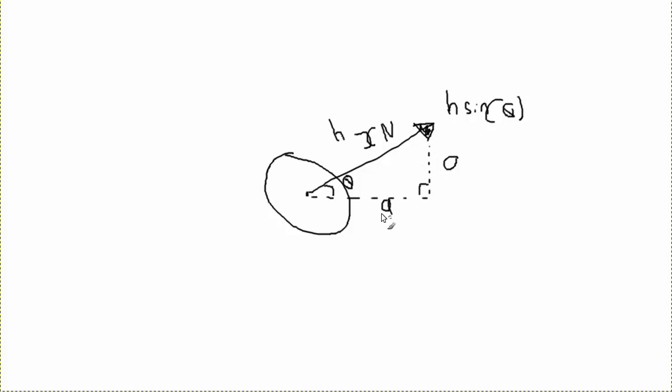In order to calculate our adjacent, which is this one here, which is adjacent to the angle, we would simply take h and multiply it by the cosine of theta. Very simple, unless you haven't done GCSE math for some reason. Very simple.